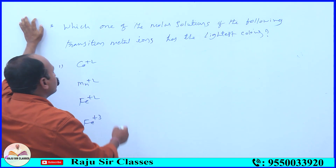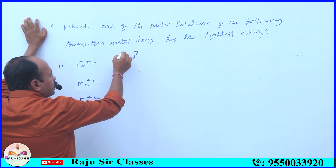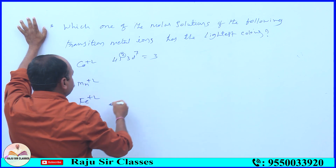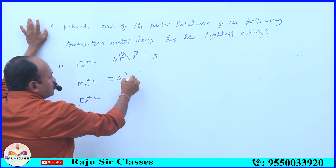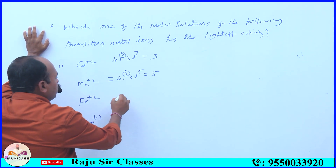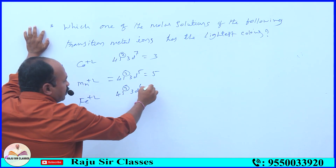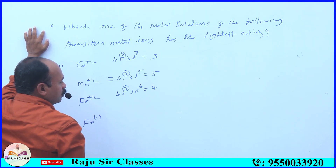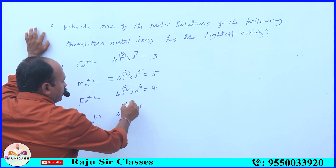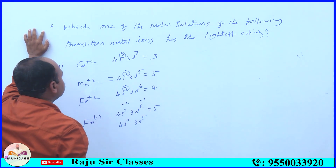For Co²⁺: configuration is 4s2 3d7; loses 2 electrons, giving 3 unpaired electrons. For Fe²⁺: 4s2 3d6. For Fe³⁺: 4s2 3d5 — high number of unpaired electrons, high color intensity.